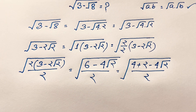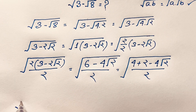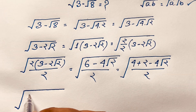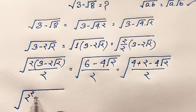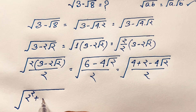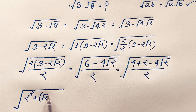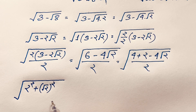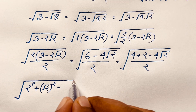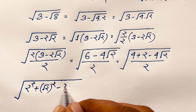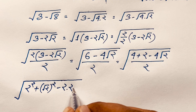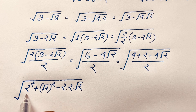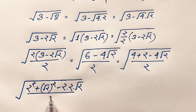Now at this moment, you can see that 4 equals 2 squared, and 4 square root of 2 equals 2 times 2 times square root of 2. So the expression inside the square root is 6 minus 2 times 2 times square root of 2, all over 2.